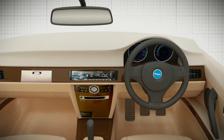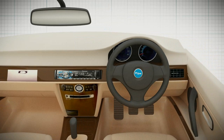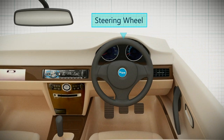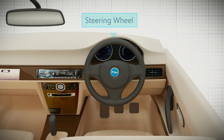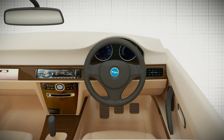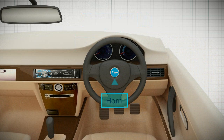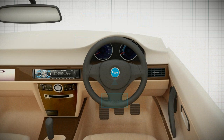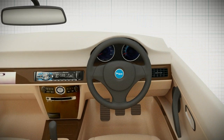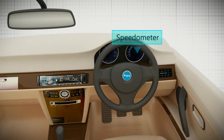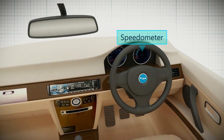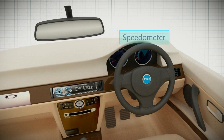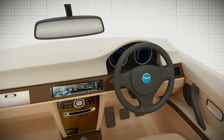There is a steering wheel which is used to give direction to the car. The steering wheel has a horn in it. In front of the driver there are several meters like speedometer, fuel gauge and temperature gauge.